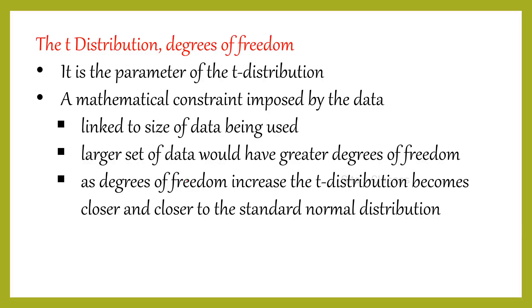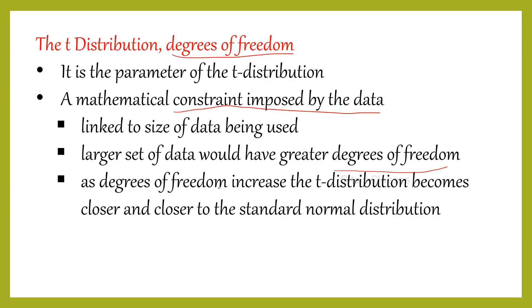Let us understand what degrees of freedom means. In normal distribution, we have two parameters — mu and sigma, that is mean and standard deviation — and they decide the normal curve. Similarly, here the degrees of freedom decides the nature of the curve. Degrees of freedom is a parameter of t-distribution. It is also a mathematical constraint imposed by the given data, and it is linked to the size of the data being used — a larger set of data would have greater degrees of freedom. As degrees of freedom increase, the t-distribution becomes closer and closer to the standard normal distribution.